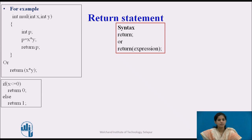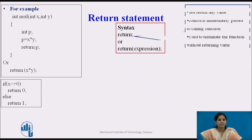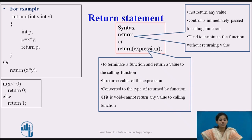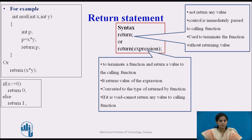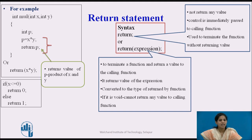Now let us see some examples of the return statement. Consider the function for multiplication of two numbers. The return type is integer, the function name is mul, and it takes two parameters of type integer. In the function body, we declare one integer variable to store the result, calculate the multiplication of the two numbers, and store that value in p. Then we use the return statement — return p — to return the product of x and y to the calling function. Instead of writing two statements, we can write a single statement: return x * y.